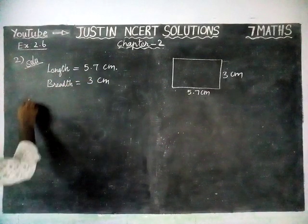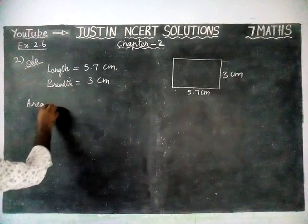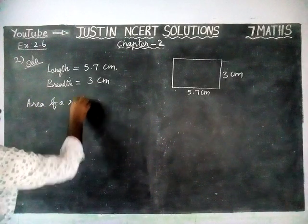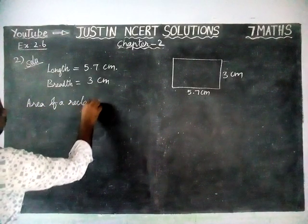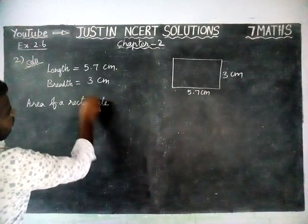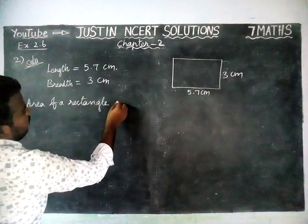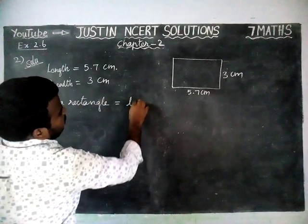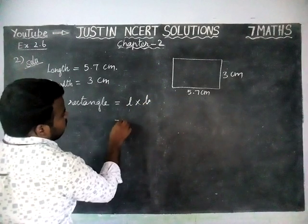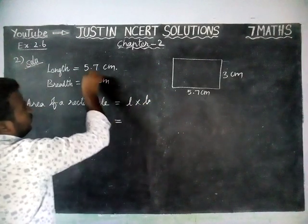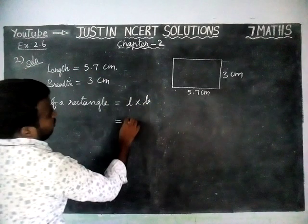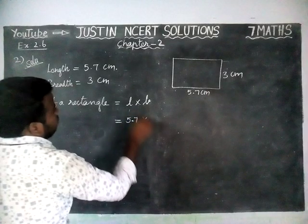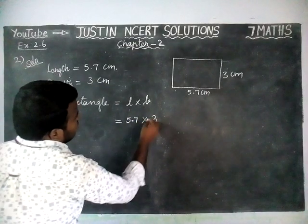Area of a rectangle. The area of a rectangle formula is equal to length into breadth. Length value is equal to 5.7, into breadth value is equal to 3.